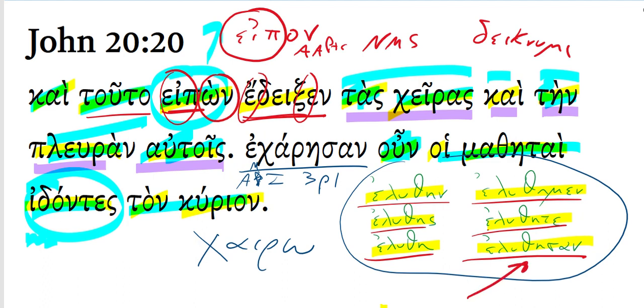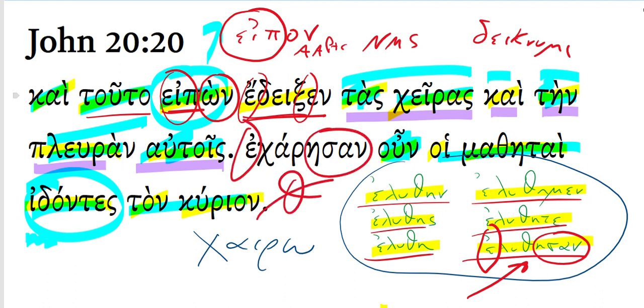That last form there, notice we have the augment, we have the ason ending. Notice up above here with this verb, we have the augment, we have the ason ending. We do not have the theta. We've had a slight spelling change in the stem in that we lost a yoda. But we do not have a theta. Some aorist passive forms do not have a theta. This one does not.